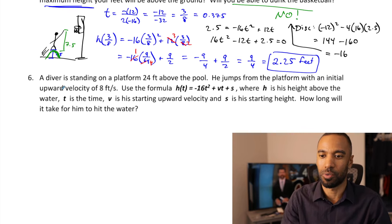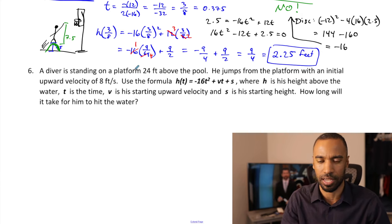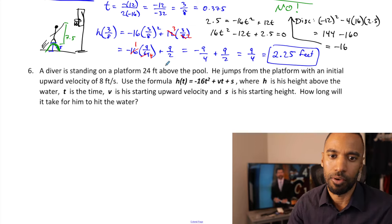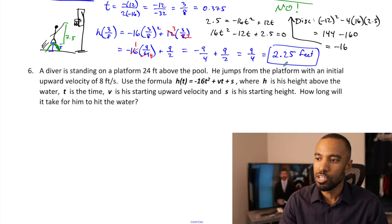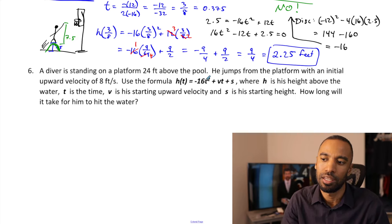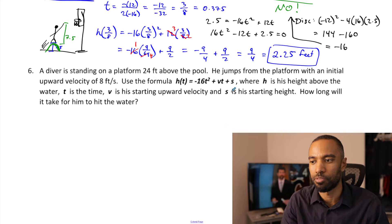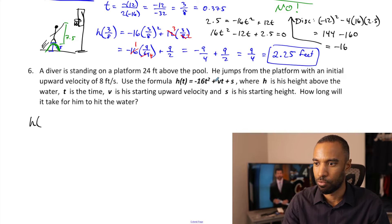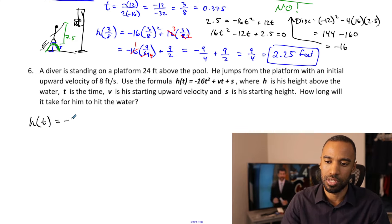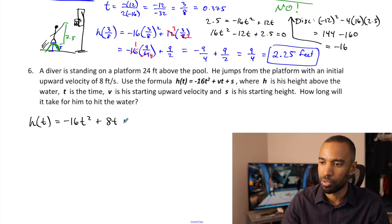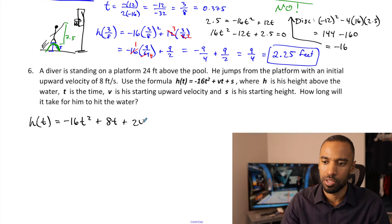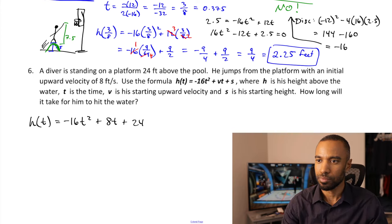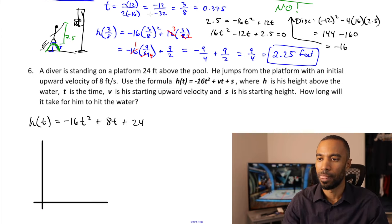One more problem: a diver is standing on a platform 24 feet above the pool. He jumps with an initial upward velocity of 8 feet per second. Using the formula where h is height, t is time, v is starting upward velocity, and s is starting height, substitute v = 8 and s = 24. So h(t) = negative 16t squared plus 8t plus 24. He's starting 24 feet above the water.